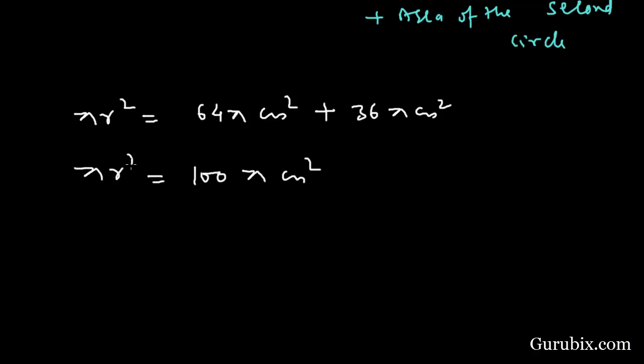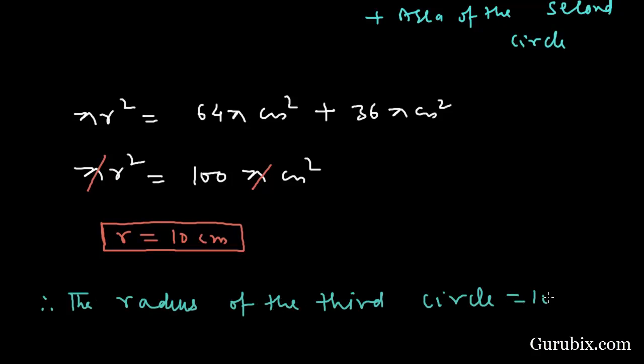Here we have pi R square equals 100 pi cm squared. Pi can be cancelled with pi. Then R equals 10 cm. Therefore the radius of the third circle is 10 cm. This is the solution of the question.